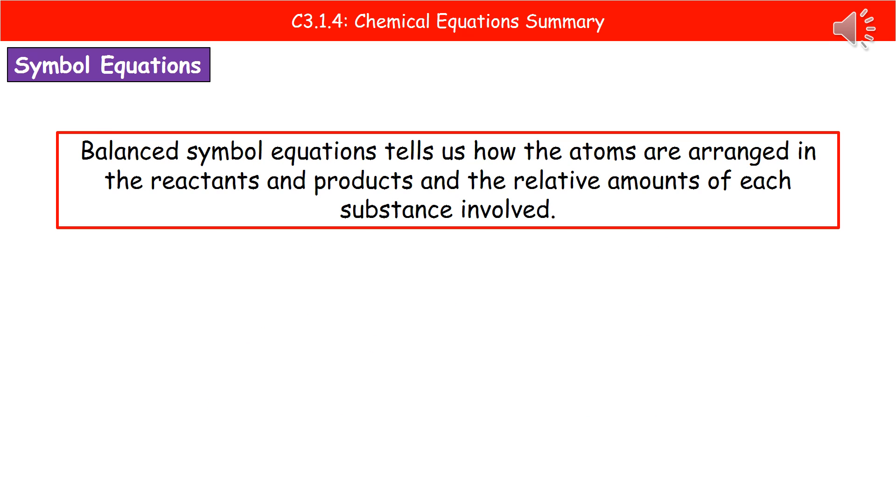The second type of equation you might be asked to write are symbol equations. These will always be balanced. So this actually tells us not only the reactant chemicals that we're dealing with, but it tells us how the atoms are arranged in the reactants and the products. It also tells us the relative amounts of each substance once it's been balanced. It relies on us using those chemical symbols from the periodic table and knowing how to balance an equation.